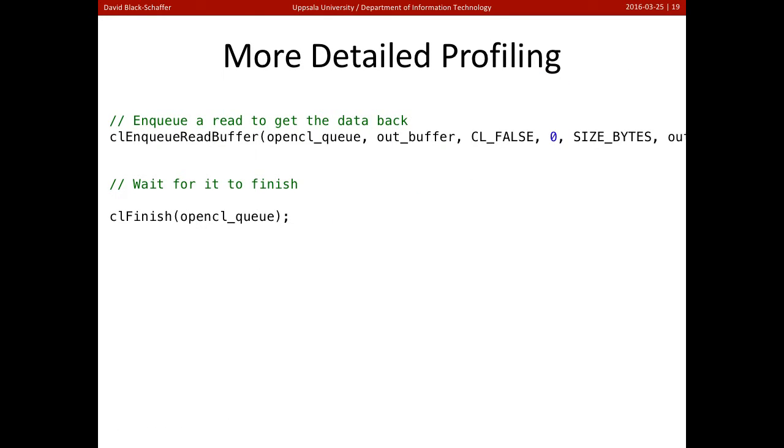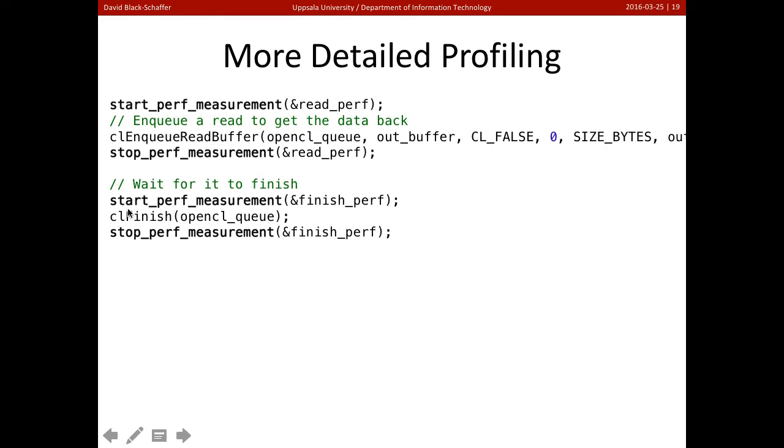So how are we going to get more detailed profiling? We're going to go in for all of our OpenCL commands here, and we're going to add profiling stuff around it. So before we enqueue a read, we're going to start a performance measurement and stop one after it. So we're putting a timer around the CL enqueue read buffer. And we're going to put a time around everything, including CL finish, to find out what's going on here.